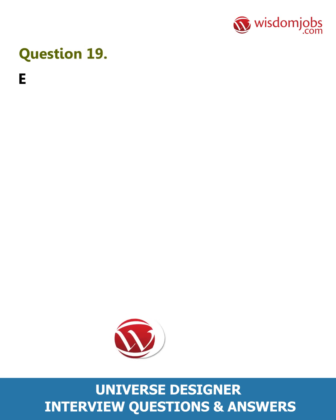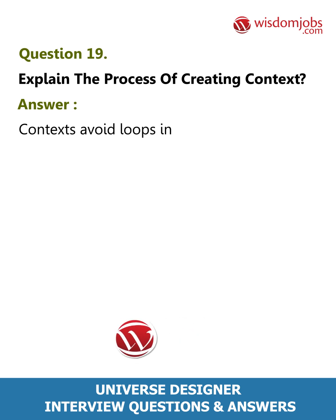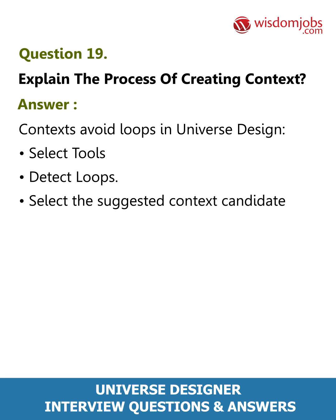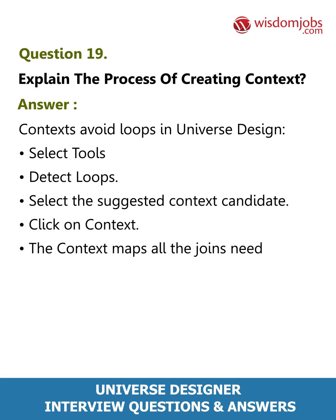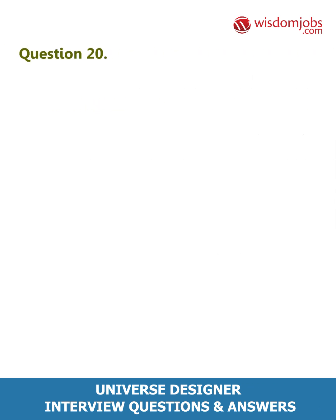Question 19: Explain the process of creating a context. Answer: Contexts are used to avoid loops in universe design. Select Tools, then Detect Loops, then select the suggested context candidate and click on Context. The context maps all the joins needed and places the selected joins in a named context. Context text avoids conflicts in finding paths.